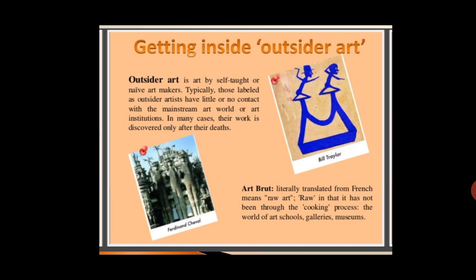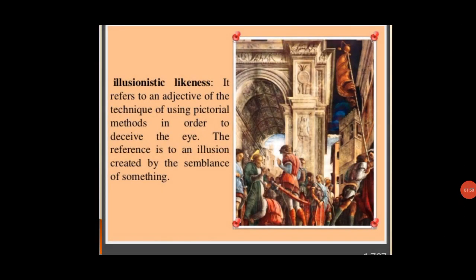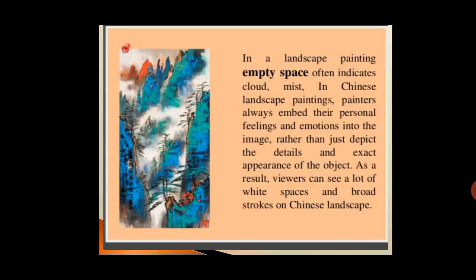Next is illusionistic likeness. It simply refers to the technique of using pictorial methods in order to deceive the eye. The reference is to an illusion created by the semblance of something — that is, whenever an artist is trying to deceive the viewer through pictures or pictorial methods. This is what we call illusionistic likeness.